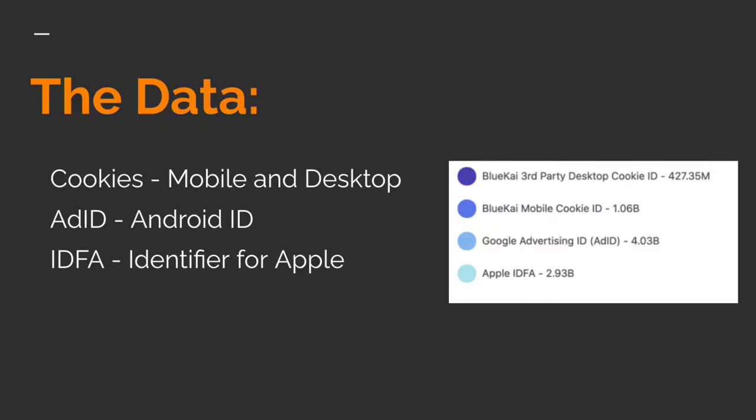What kind of data does a DMP actually store? A DMP stores just three types of data. One is cookie IDs — it can be for a mobile device or a desktop. It also contains ADIDs, which is short for Android ID, used in all Android devices and unique for each device. Or if it's an Apple device, we use IDFA, or Identifier for Apple. These are the three types of device IDs a DMP stores. Whenever we refer to the number of users in DMP, it actually refers to devices, not an individual.